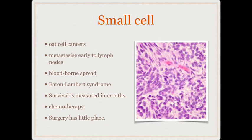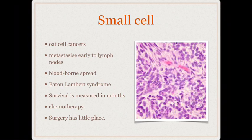Small cell cancers are otherwise known as oat cell cancers because of the characteristic oat-like cells present in these tumors. They have homogenous monomorphic cells arranged in clusters. These tumors metastasize very early to the lymph nodes and also spread hematogenously very early, making them very lethal. The prognosis is quite bad and survival is measured only in months.